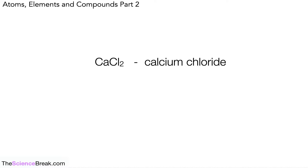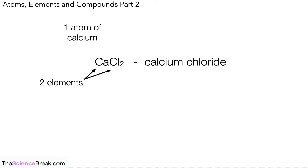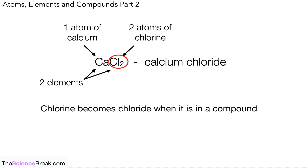Let's take a closer look at calcium chloride. From its formula CaCl₂, we can tell it has two elements: calcium and chlorine. There is one atom of calcium, and next to the chlorine there's a little subscript number two — that number applies to the chlorine, meaning there are two atoms of chlorine.